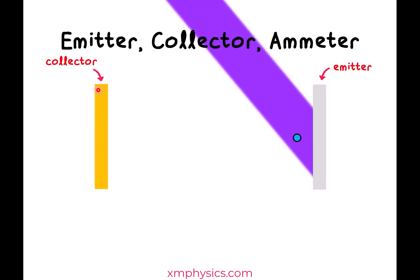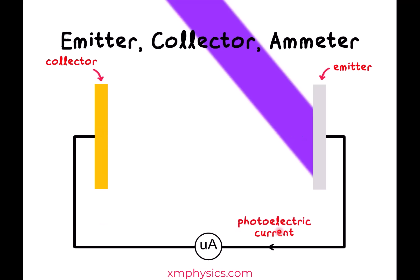The next bit is quite ingenious. We connect the collector back to the emitter with a piece of wire, and then we stick an ammeter there — actually a microammeter, because the currents that we are measuring, the so-called photoelectric currents, are usually quite small, a few microamps.